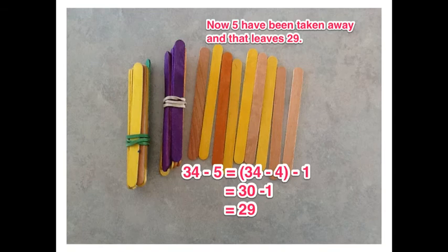Now that 5 have been taken away, I can see that he's left with 29 and here is all the working out for my number problem. First of all I started off with 34 take away 5.